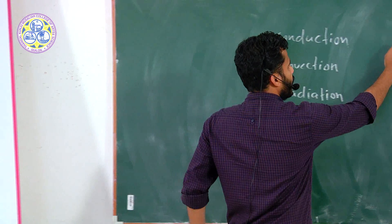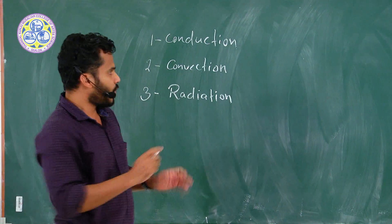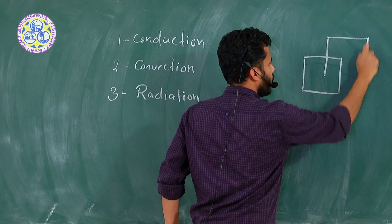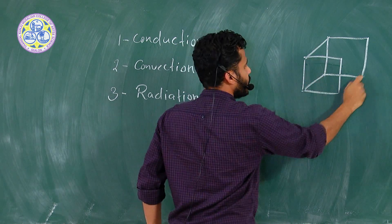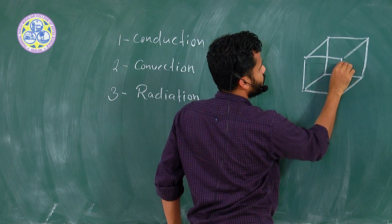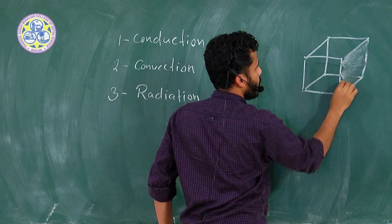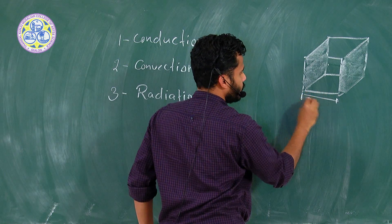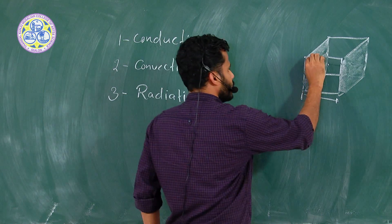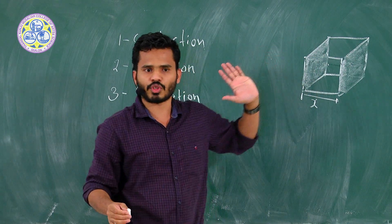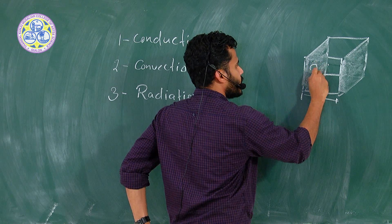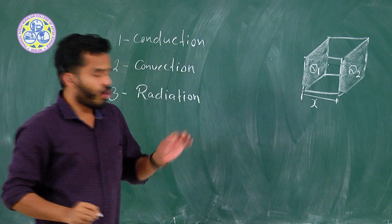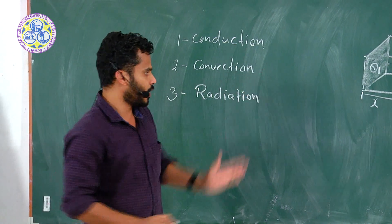Let me give an example of conductivity in a material. Suppose this is a cube-shaped material. This is one face of the cube and this is the second face, at a separation of distance X. Heat is transferring through this material. The first face is at temperature theta 1 and the second face is at temperature theta 2. The amount of heat transferring through this material is proportional to the area of cross section A, the temperature difference theta 1 minus theta 2, and the time of flow.